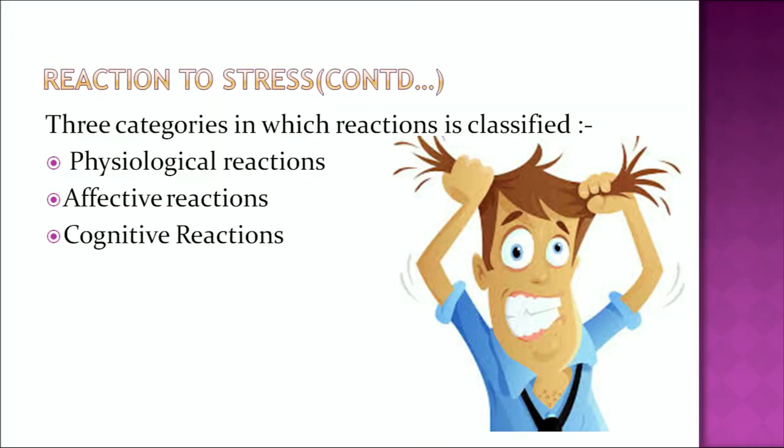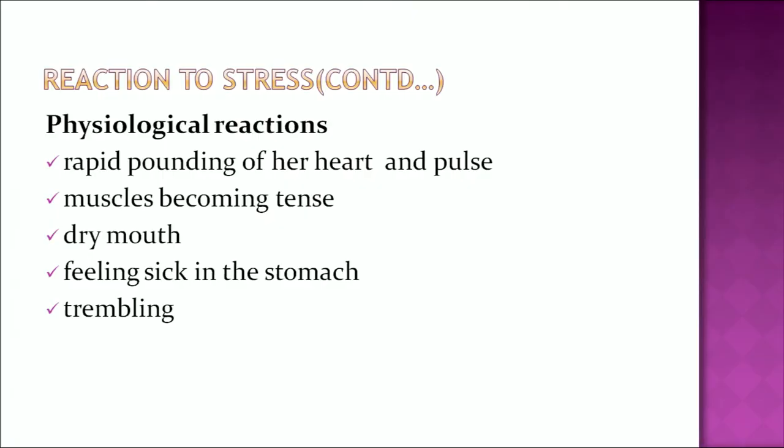We have discussed that stress can be caused by the self, by environment, or by other persons around us. We must know what are the various reactions to stress — that is, whenever we are under stress, how do we react. There can be three types of reactions to stress: first is the physiological reaction, second is the affective reaction, and third is the cognitive reaction. Physiological reaction means how your body responds under a stressful situation. When you are under stress, your heart starts pounding very fast, your pulse rate is very high, your muscles become tense, you have a dry mouth, and sometimes you feel sick in the stomach.